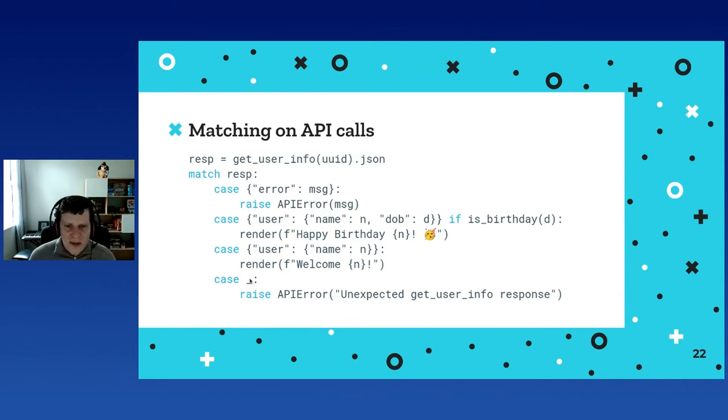But the second case will cover the birthday cases. So if it's not the birthday, I will fall back into this third case and we'll just print a generic welcome to the user. And if I get anything else from the API, probably there's a bug in either the API code or my code. So I'm raising an exception and telling that I get an unexpected response. Again, we can see that cases go from specific, the one on the top, to general, the one on the bottom.